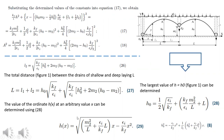Analyzing equation 29, it can be agreed that it has an advantage over equation 8 because it includes only two given values: the distance between the drains L and the hanging height M2 of an imperfect shallow drain lying above the waterproof layer.